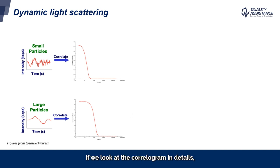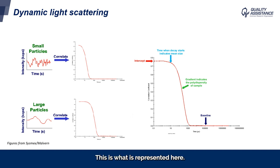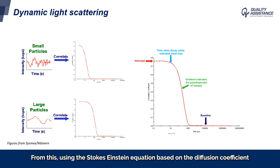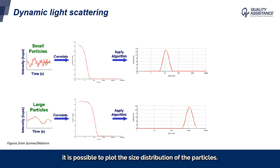If we look at a correlogram in detail, the first part is the decay, which is the indication of the size. So for a small particle, the decay is faster than for a large one. The second part, the slope, is an indication of the polydispersity, and the signal goes back to a baseline. From this, using the Stokes-Einstein equation based on the diffusion coefficient, it is possible to plot the size distribution of the particles.